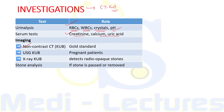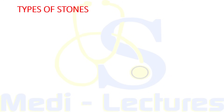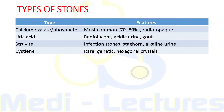Non-contrast CT-KUB is the gold standard investigation but cannot be done in pregnant patients, for whom USG-KUB is used. X-ray can detect radio-opaque stones like calcium oxalate and phosphate. If the stone has already passed, stone analysis can be done for prevention of further stone formation. Crystalluria helps identify the stone type: envelope-shaped crystals suggest calcium oxalate, and hexagonal crystals suggest cystine stones.